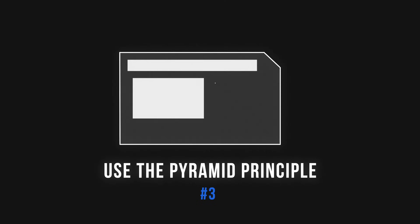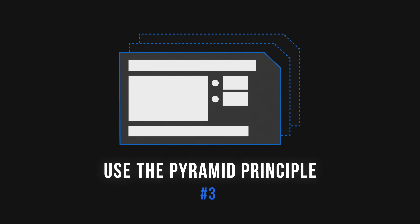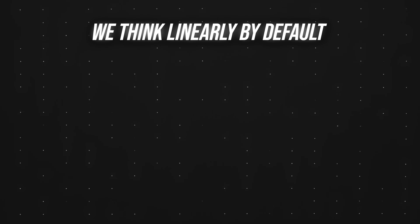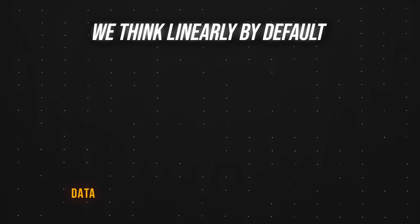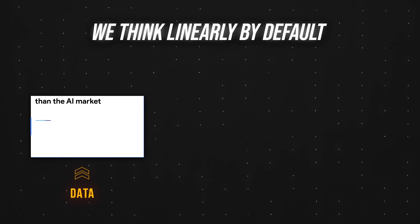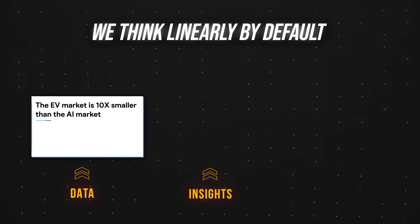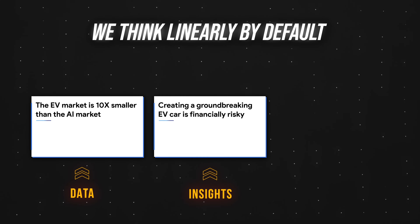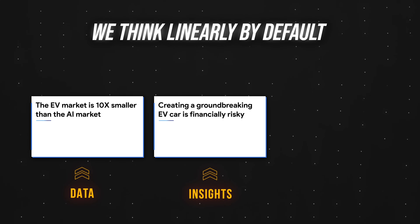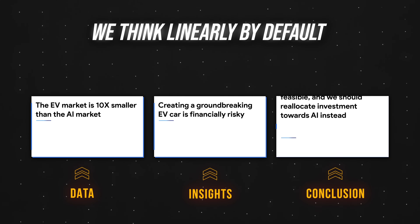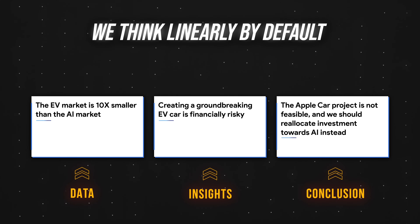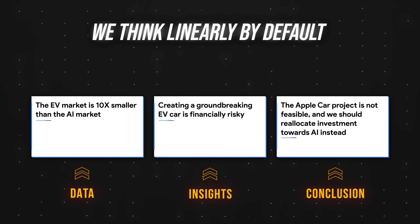These next tips have to do with the overall structure of your presentation, or what Harn calls the setup. Tactic number three is to always use the pyramid principle. As human beings, we think by default in a linear fashion: first, here's the data; the EV market is 10 times smaller than the AI market. Second, here are the insights; creating a groundbreaking EV car is financially risky. And finally, here's the conclusion: the Apple Car project is not feasible, and we should reallocate investment towards AI.